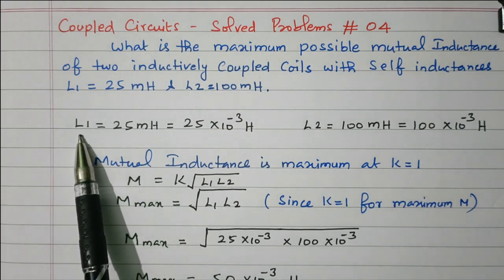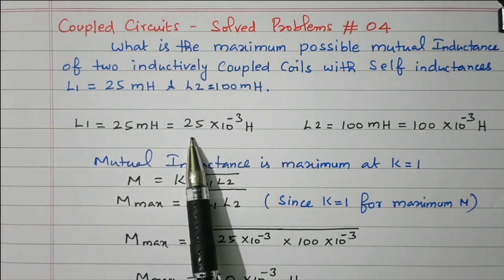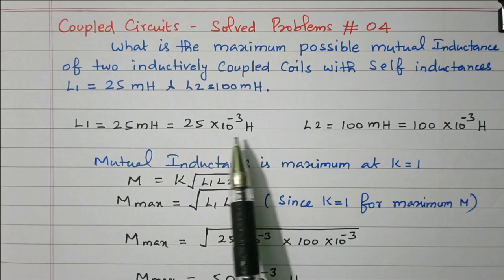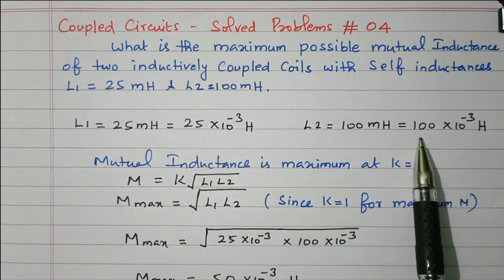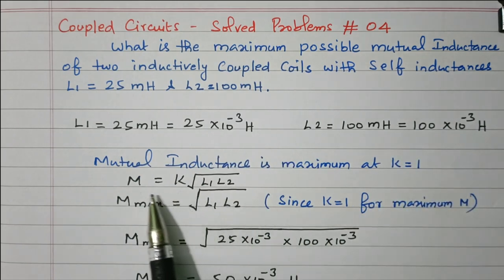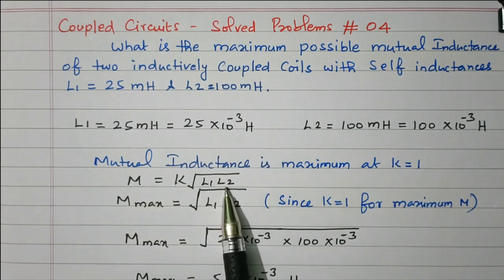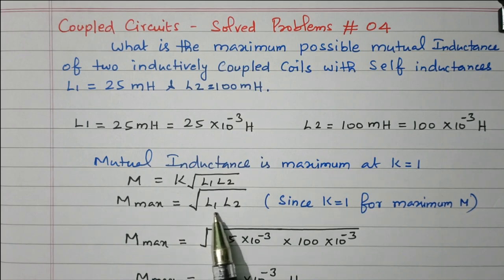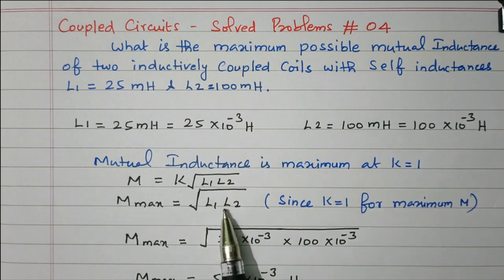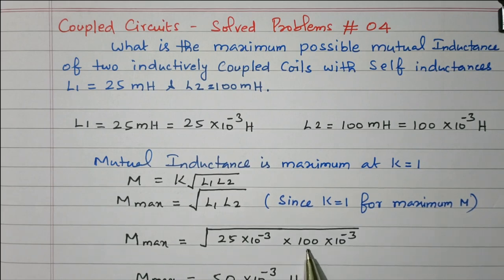The self inductance L1 equal to 25 millihenry, that is 25 into 10 to the power minus 3 henry. Similarly, L2 equal to 100 millihenry, so 100 into 10 to the power minus 3 henry. So M equal to K square root of L1 into L2; for maximum, K should be 1. So M max, maximum mutual inductance, equal to square root of L1 into L2 since K is 1. Substituting: square root of 25 into 10 to the power minus 3, multiplied by 100 into 10 to the power minus 3.